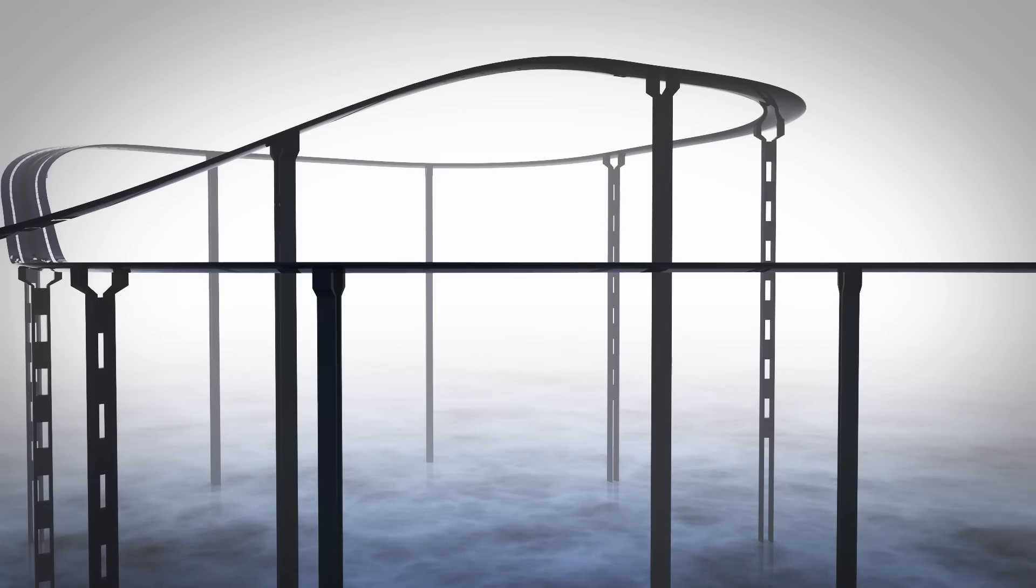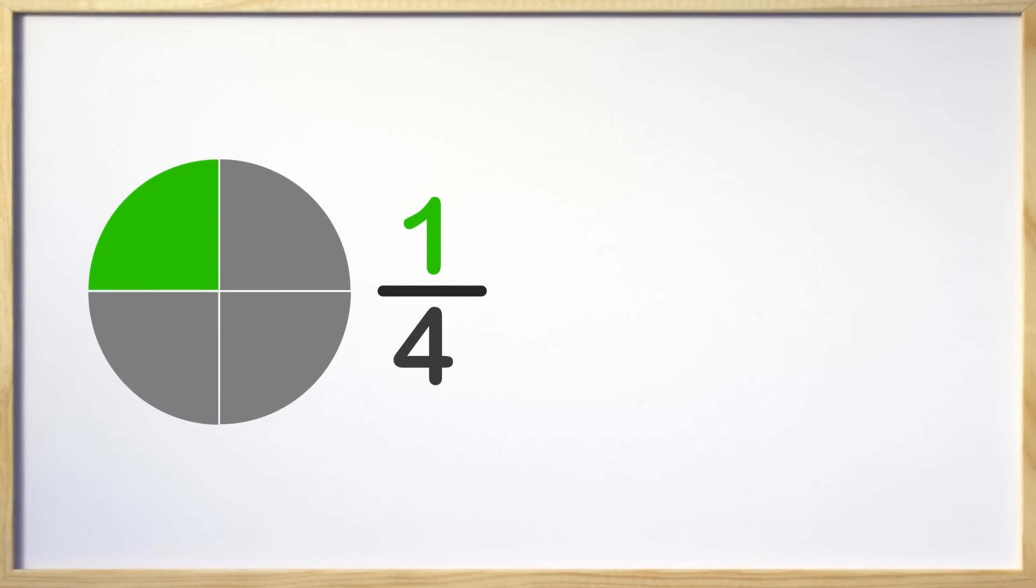To start off, let's review some concepts about fractions. Here we have a fraction of 1 fourth. A fraction is a part of a whole or a part of a group. The numerator is the number on top and shows the parts we are talking about. In this case, it is the one green part of the circle.